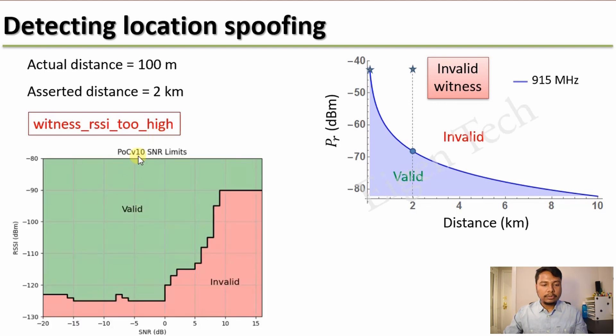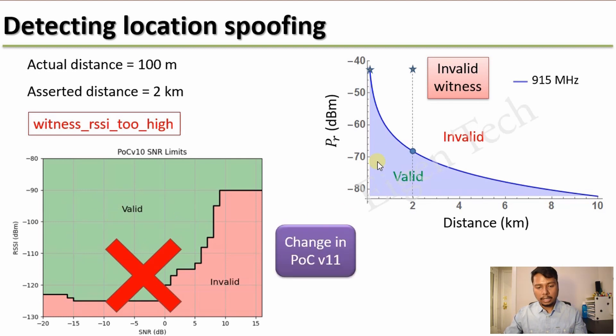In the current POC version 10, actually this is not used. What is used is the RSSI versus SNR. SNR stands for signal to noise ratio. And the green zone is valid, the red part is invalid. But it turns out that this is not the best way of detecting the validity of the witness. So this will no longer be used. And what will come next is in version 11, this graph or some slight modification of this graph will be used. And this will be more accurate. You can see now with version 11, the anti-gaming will be stronger and those location spoofed cases will get less valid witnesses. As a result, it will earn less HNTs.